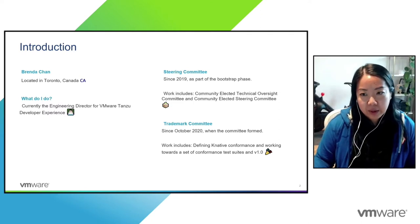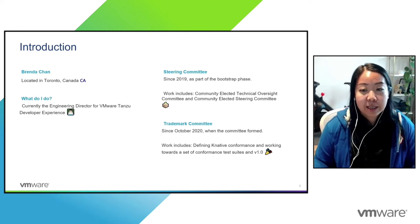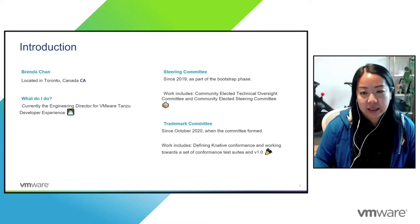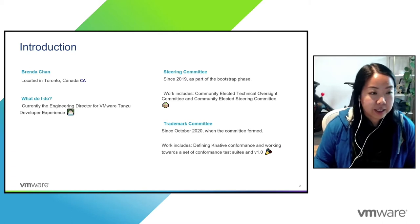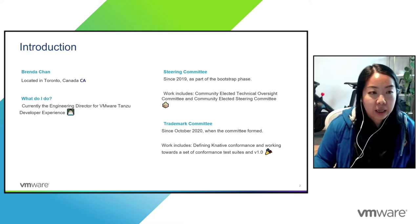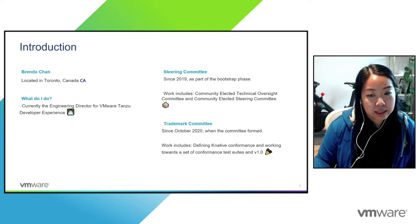Within the Knative community, I've been on the steering committee since the bootstrap phase in 2019. During my time on steering, we've worked towards a completely community-elected technical oversight committee, or TOC, and steering committee. In October 2020, we formed the trademark committee, and one really neat thing we're focusing on right now is actually defining Knative conformance and working towards a set of conformance test suites for when we plan to 1.0 this year.